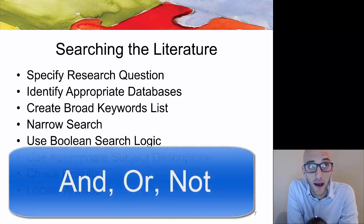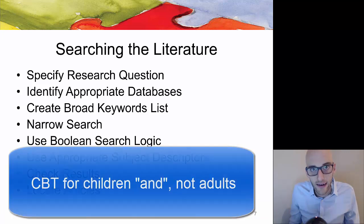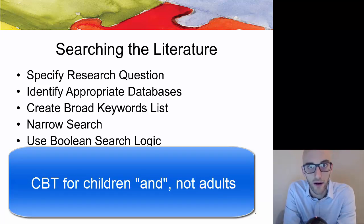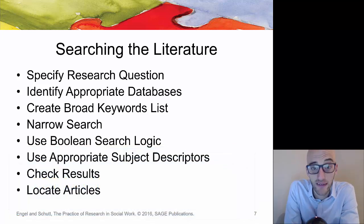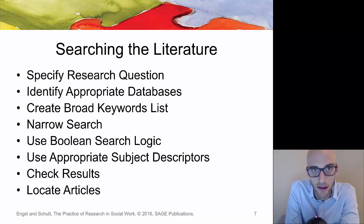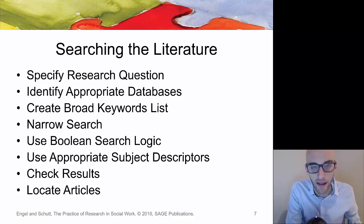For example, you could search for CBT interventions for children and adolescents NOT adults to narrow your search terms. Also use appropriate subject descriptors describing the population you're hoping to research. Check your results and find the articles. Some articles are easy to find as a PDF, but if you can't find them, the library system here is excellent at locating them from different libraries, getting you the PDF and emailing it to you.